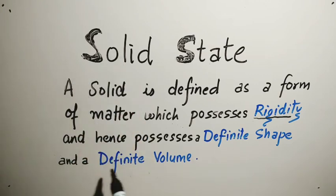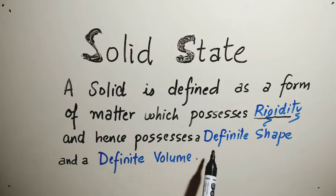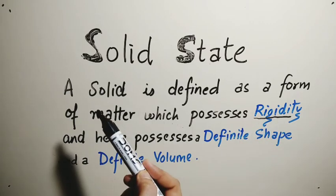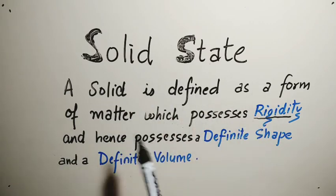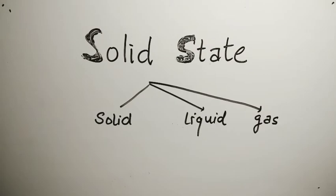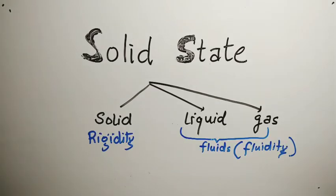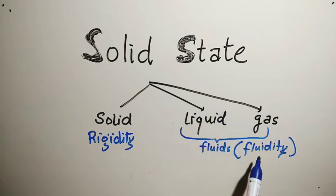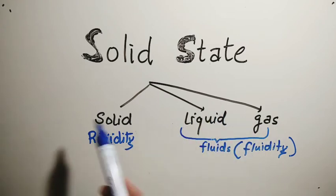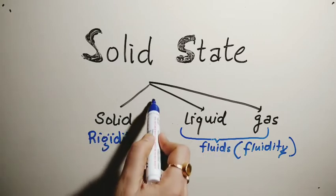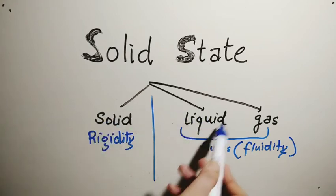Solid state is an important point. Previously we only said definite volume and definite shape, but all this occurs because of rigidity. So we can write it as: solid is defined as a form of matter which possesses rigidity. The main point of difference between solid, liquid, and gas is that liquids and gases come under the category of fluids because both of them can flow, hence they possess fluidity, whereas solid has the property of rigidity.